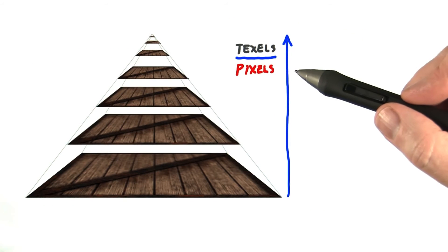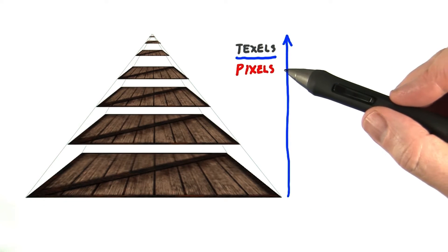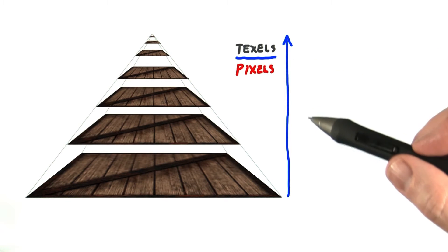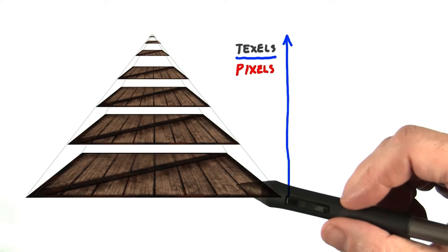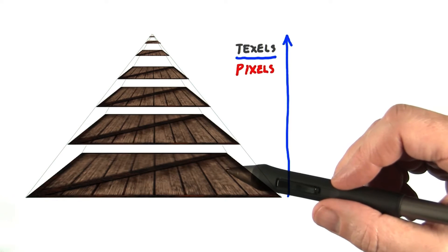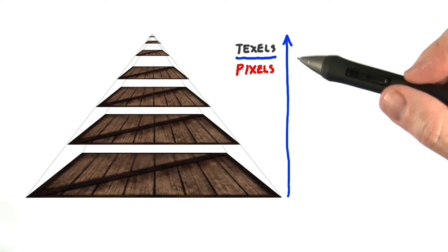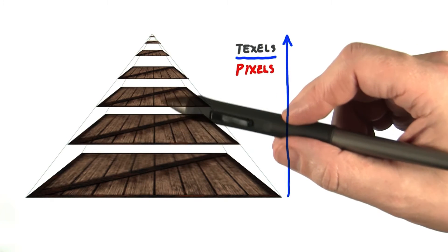What the GPU does is determine the ratio of texels to pixels. If this ratio gets much larger than one to one, a lower resolution version of the texture is used instead. As this ratio gets higher and higher, lower and lower resolution textures get used.